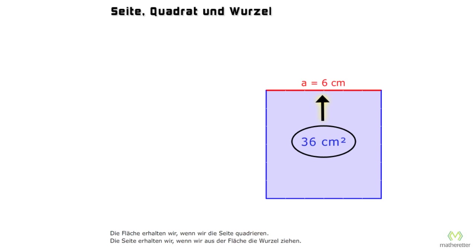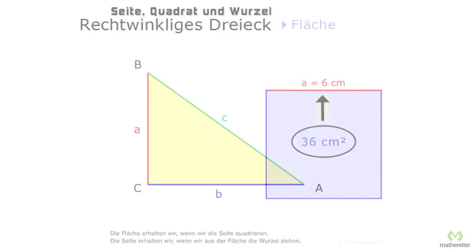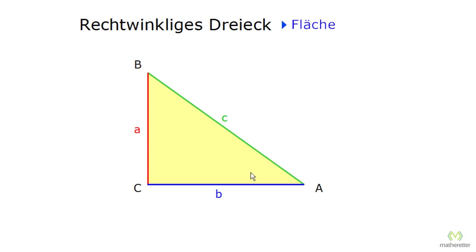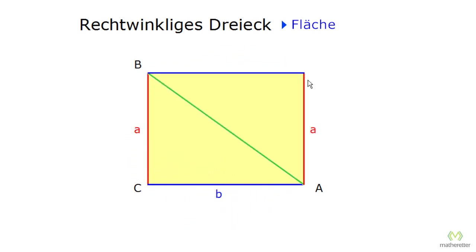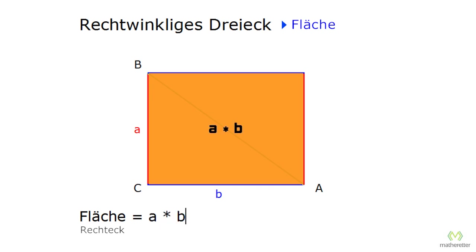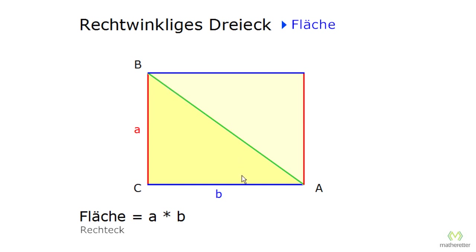Next we have to think about how we can determine the area of a right-angled triangle, and that is relatively easy. We just take our triangle, duplicate it, and attach it to the original triangle. As you can see, we have now created a rectangular area, and the area of a rectangle is given by side A times side B. But we do not want the entire area — instead we only want half. That means we divide by 2, so the triangular area is A times B divided by 2.